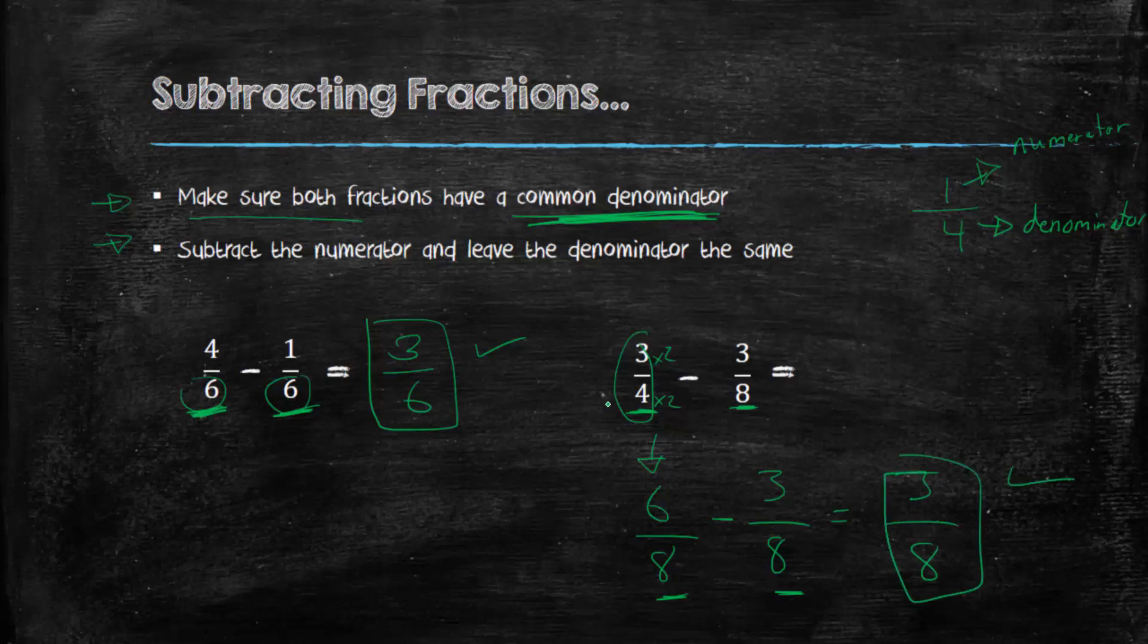Now you might be thinking, what did I do here? If you're not understanding this, please go watch my video, Equivalent Fractions. You have to understand, 3 over 4 is equivalent to 6 over 8. These are equivalent fractions. In fact, if I were to write 3 over 4 equals 6 over 8, that would be a correct statement. These two are the same thing. They look different, but from a value point of view, they're the same.